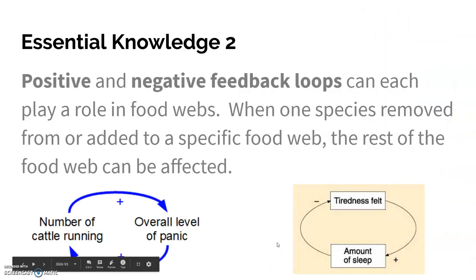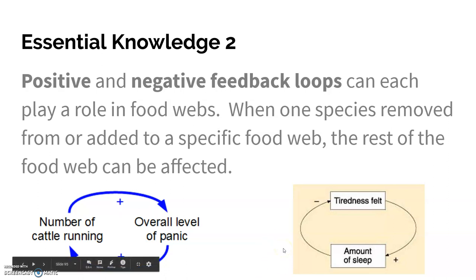It can get super complicated. A thing that's going to come up a lot in this class is the idea of positive and negative feedback loops. Positive feedback loops are things where A causes B and then the existence of B causes A to happen more — a self-perpetuating cycle where you get more and more happening. A negative feedback loop is the opposite: A causes B and then B is like a shutdown mechanism for A, so it stops that from happening.